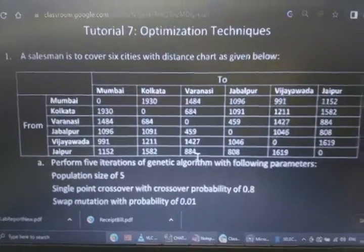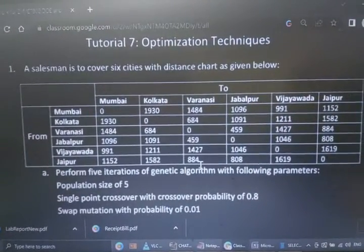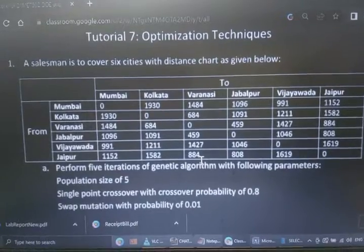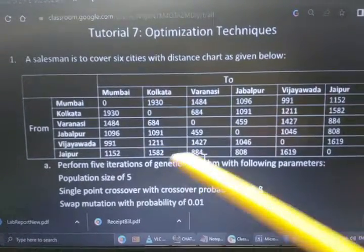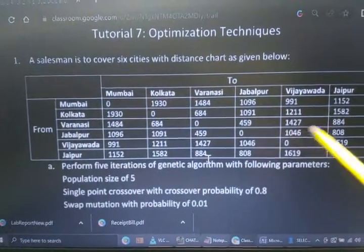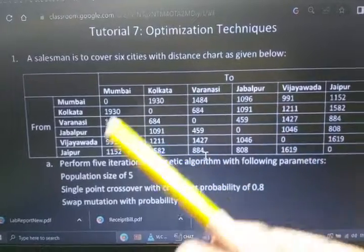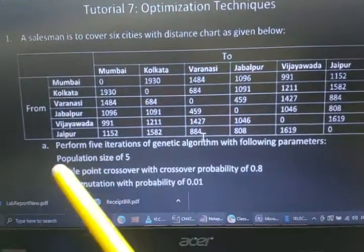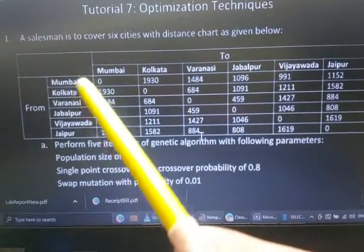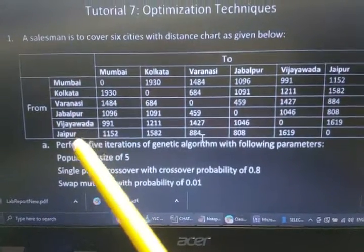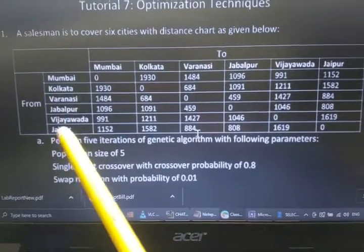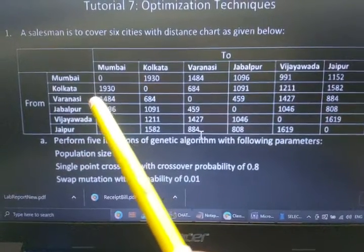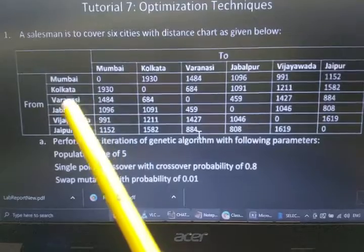This is research methodology, second question on optimization technique. It says a salesman has to travel all these cities and has to do a Hamiltonian path in which he should start from one city, move through all the other cities, and return back to the starting city without revisiting a city twice except the starting node.